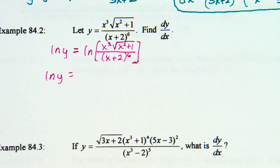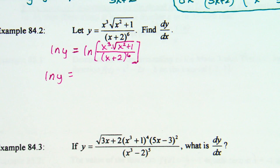You have two things being multiplied on top, so those two are going to be split into adding. I'm going to rewrite this as not two natural logs but three. So: natural log of x cubed — and if we go ahead and apply the power rule also, that's 3 natural log of x.